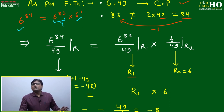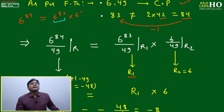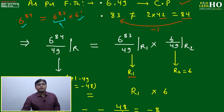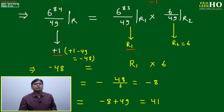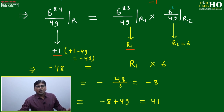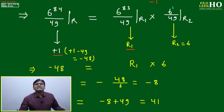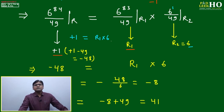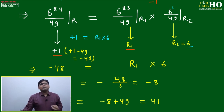We can write 6^84 = 6^83 × 6^1. So: remainder of 6^84 ÷ 49 = (remainder of 6^83 ÷ 49) × (remainder of 6^1 ÷ 49) = r1 × 6. Since 6^84 ÷ 49 gives remainder +1, we have: +1 = r1 × 6. We exploit this equality to find r1.